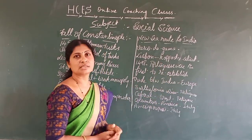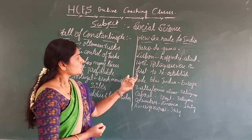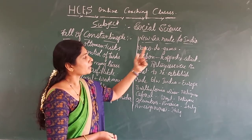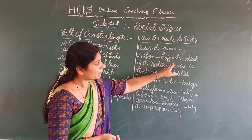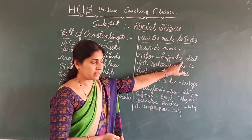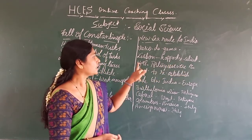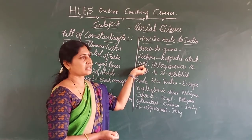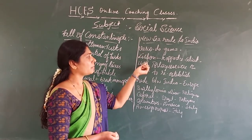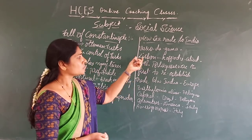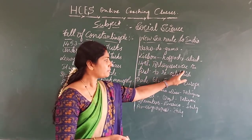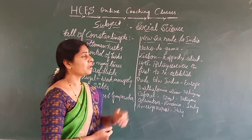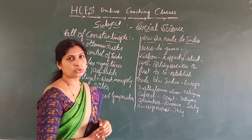At last, Vasco da Gama succeeded in finding the sea route. He left Lisbon and reached Kappadu, which is near Calicut in the present Kerala state, in the year 1498. This was a great success — Vasco da Gama had reached India. The Portuguese were the first to restore the connection between India and Europe by finding this new sea route to India.